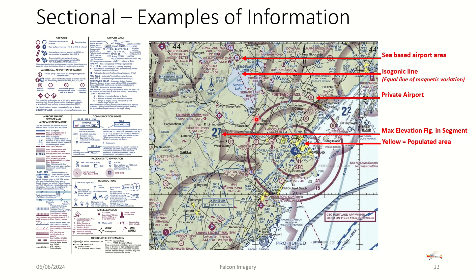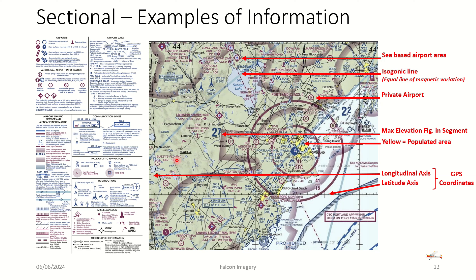The yellow on the sectional represents populated areas as you would see them at night through the lights. The vertical lines are the longitudinal axis lines and the horizontal lines represent latitude lines, which allow you to find any GPS position on the sectional chart.